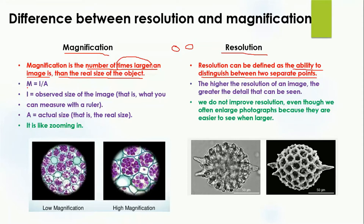To find out the magnification, we use the formula: M = I / A, where M is the magnification, I is the observed size of the image which we measure with a ruler, and A is the actual size of that image.